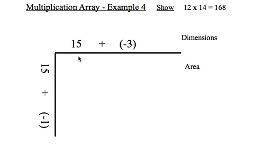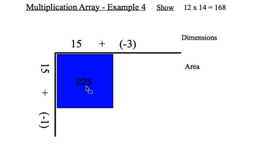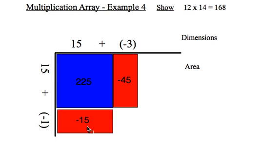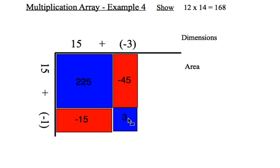So 15 times 15 in the upper corner here gives me 225. Now here's where things get a little bit different. 15 times negative 3 is negative 45, and I will use red to represent negative. Negative 1 times 15 is negative 15. And negative 1 times negative 3, so two negatives multiplied together give me a positive 3. So when I sum those terms up, 225 plus 3 minus 45 minus 15, again, I come up with 168.